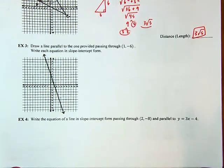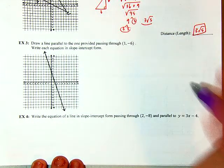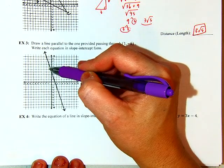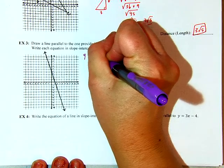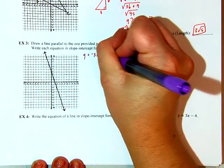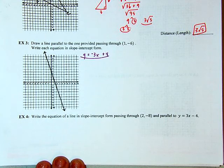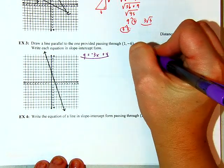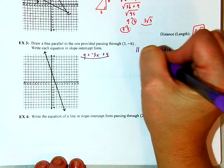Next is a review: draw a line parallel to the one provided that passes through point (1, negative 6), writing each equation in slope-intercept form. The given line has slope negative 3 — going down 3, right 1 — so y equals negative 3x plus 4, passing through the y-axis at 4. As a point, that's (0, 4). Parallel lines have the same slope.